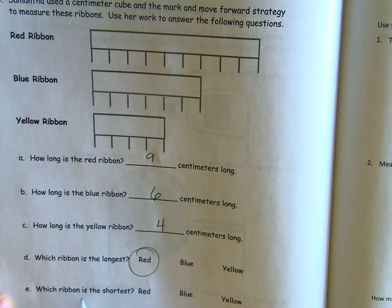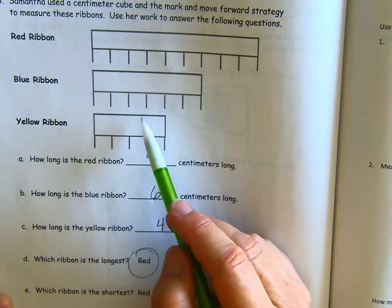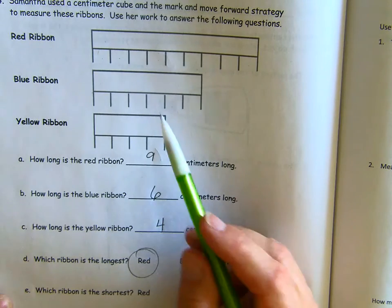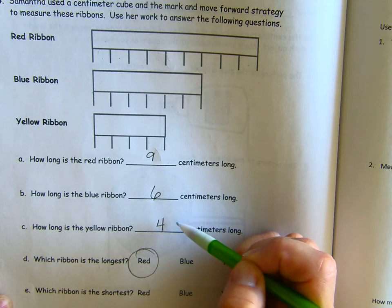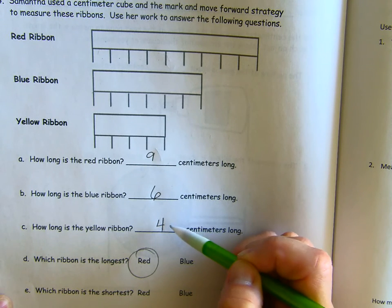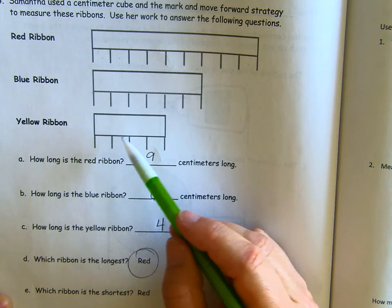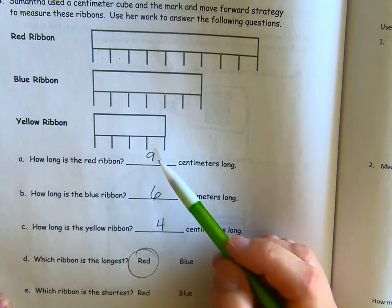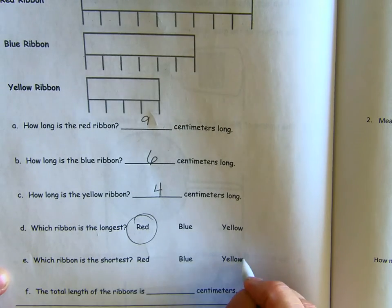Which ribbon is the shortest? Red, blue, yellow. You can tell by looking at them or you can tell by the measurements. Four centimeters is the smallest number. So, that's going to be the yellow ribbon is the shortest ribbon. So, I'm going to circle yellow.